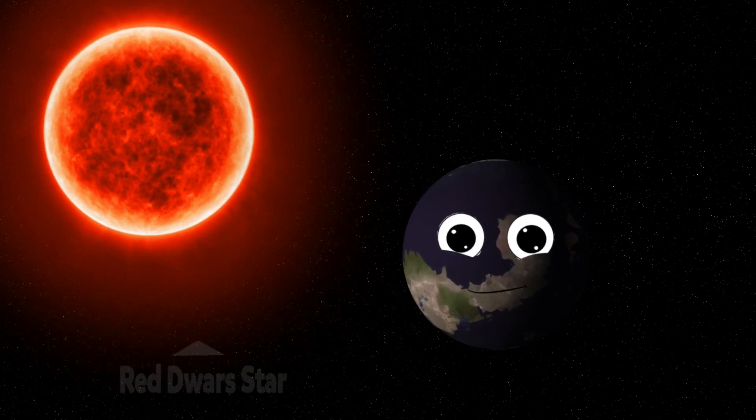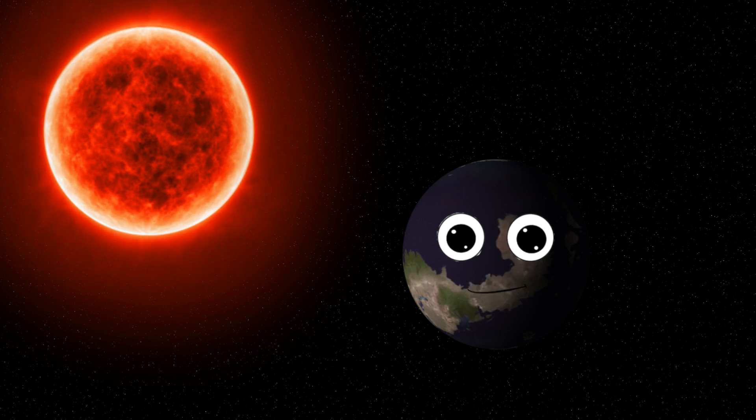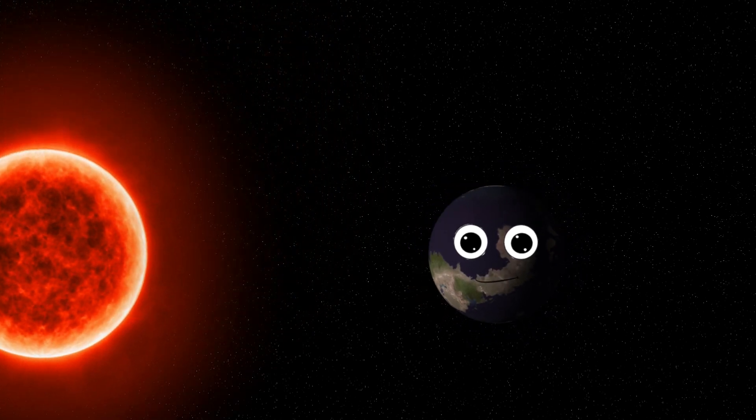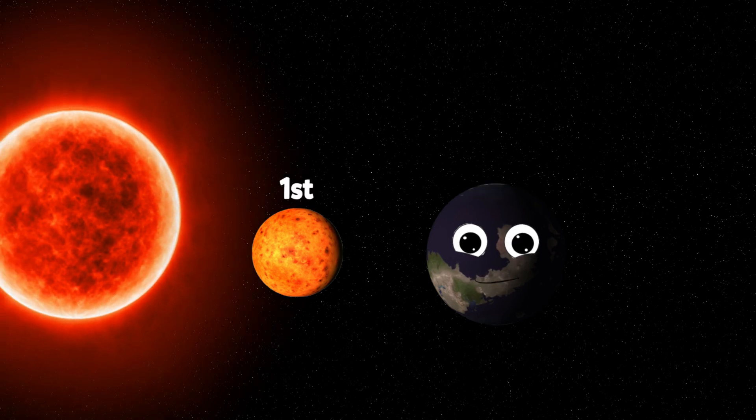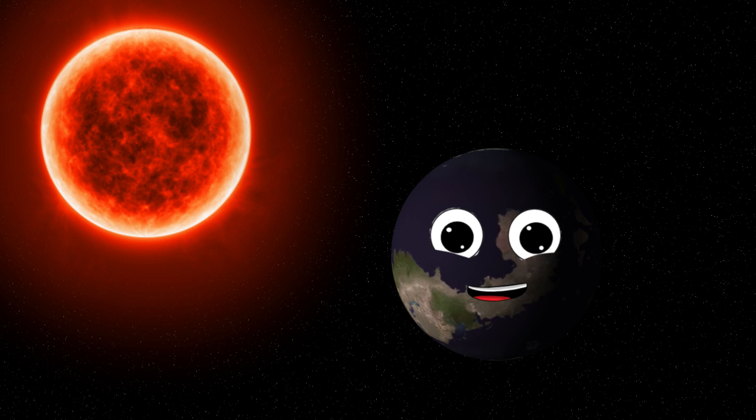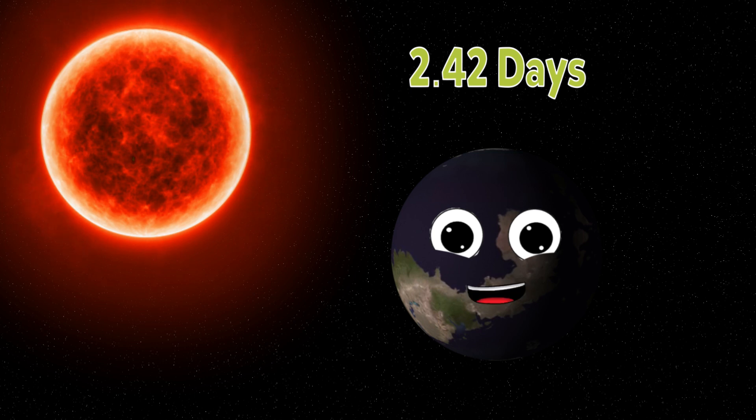I am close to my host star, but not the most closest, because there's other planets further than me like TRAPPIST-1b. It's the closest planet, because it's the first planet. A year on me is 2.42 days. Ain't that pretty cool?